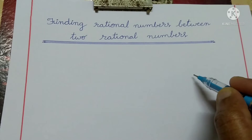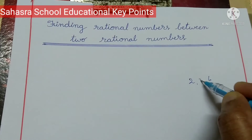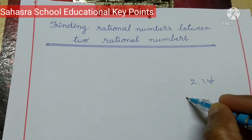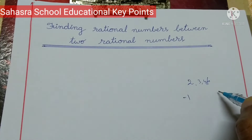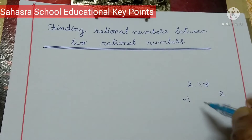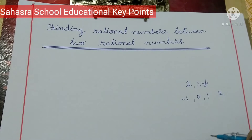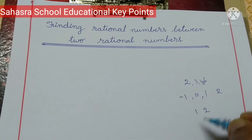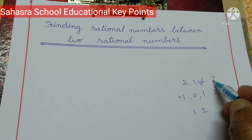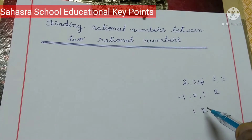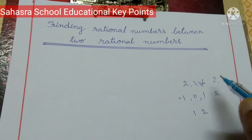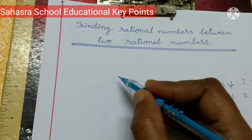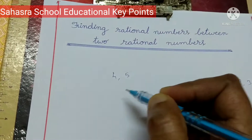Suppose natural numbers between 2 and 6 are 3, 4, 5. Integers between minus 1 and 2 are 0 and 1. But between 1 and 2, there are no natural numbers — so the natural numbers between 2 and 3 is just 1 value. But rational numbers between 4 and 5 — there is more than 1.